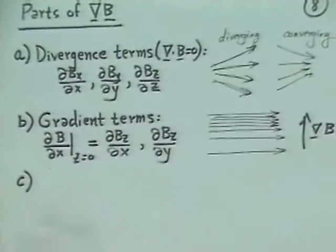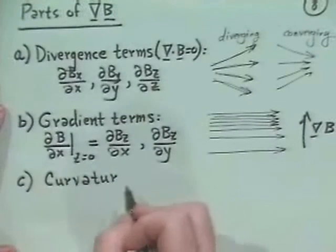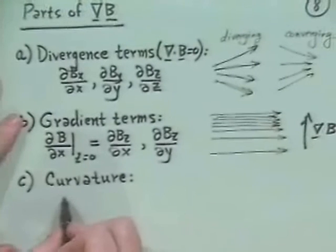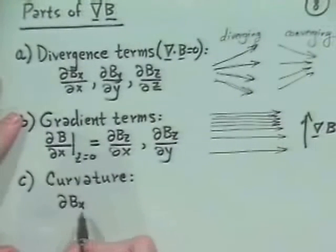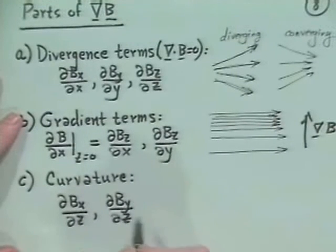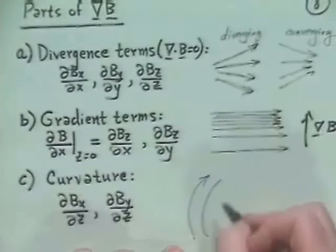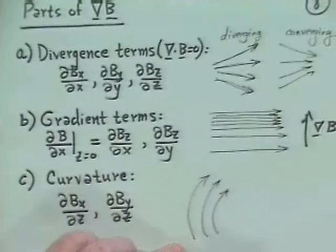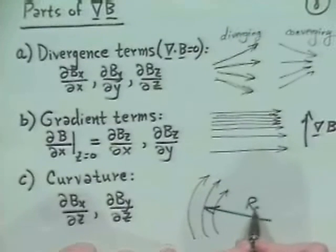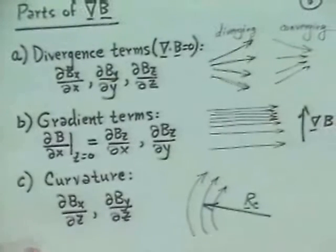Third, the curvature terms — dB_X/dZ and dB_Y/dZ — represent field lines that are curved. It is convenient to define the radius of curvature of those field lines. So we have divergence/convergence, grad B (density), and curvature as three types of magnetic field structure.